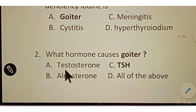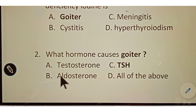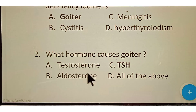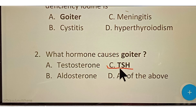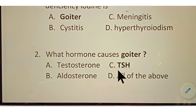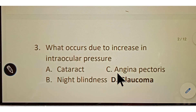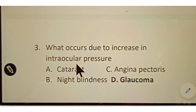Question number two: what hormone causes goiter? Options given: A. Testosterone, B. Aldosterone, C. TSH, D. All of the above. The correct answer is option C, TSH — thyroid stimulating hormone. Thyroid stimulating hormone causes goiter. Goiter is the enlargement of the thyroid gland.